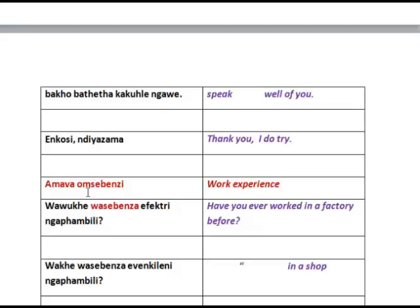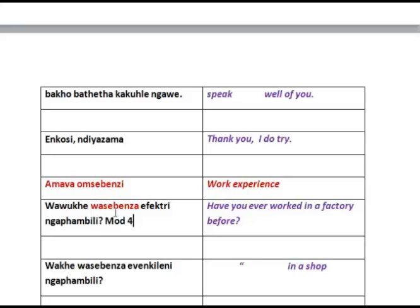And then we look at the work experience. 'Wa wu ke wa sebenza' — that is a phrase or form of expression which is very useful, just to ask whether something has ever happened. This 'wa' is past tense — 'Have you ever worked?' This form of the past tense will be explained in module 4, in two modules' time. The question is then repeated in a whole variety of workplaces.